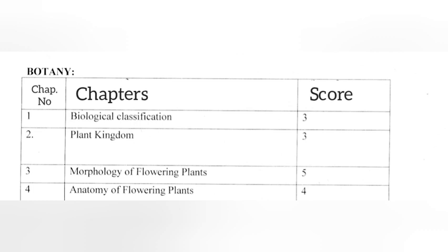Chapter 1 Biological Classification Score 3. Chapter 2 Plant Kingdom Score 3. Chapter 3 Morphology of Flowering Plants Score 5.